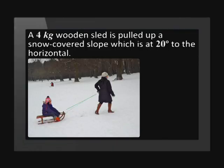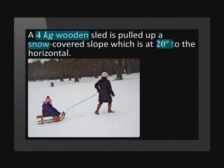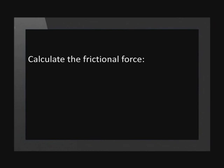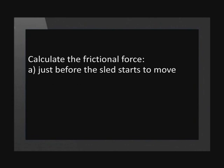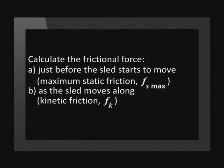Now let's answer a question about an inclined plane. A 4 kilogram wooden sled is pulled up a snow covered slope which is at 20 degrees to the horizontal. Calculate the friction of force A just before the sled starts to move and B as the sled moves. So again, we need to find the maximum static friction between the two surfaces in A and the kinetic friction in B.